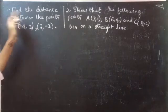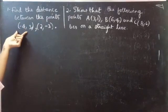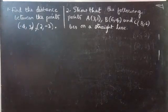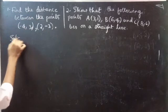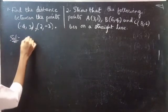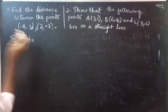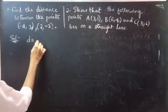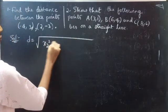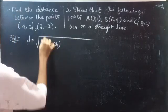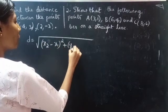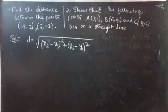First one: find the distance between the points minus 4 comma 3 and 2 comma minus 3. Solution. So we are given two points. The distance d equals to — we know that the formula is d equals to square root of (x2 minus x1) whole square plus (y2 minus y1) whole square.